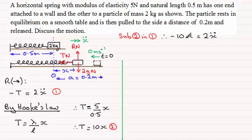And if I divide both sides by 2 and make the acceleration x double dot the subject, I therefore have x double dot equals minus 5x. And does this look familiar? Well, it's the general form of the equation for simple harmonic motion. Remember that the form for simple harmonic motion was that the acceleration was equal to minus omega squared x, where omega squared was a constant.